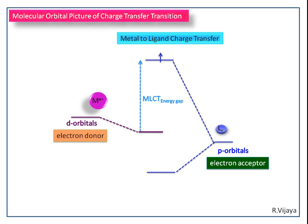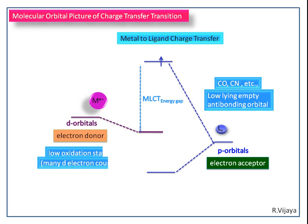Here the central metal ion is the electron donor and the ligand acts as the electron acceptor. The MLCT energy gap can be reduced by using pi-accepting ligands, because these pi-accepting ligands have a low-lying empty anti-bonding orbital, and also by using a low oxidation state of the central metal ion. This can reduce the MLCT energy gap and facilitate the charge transfer transition.